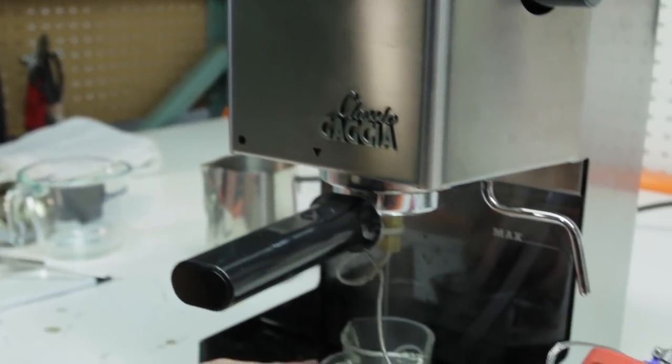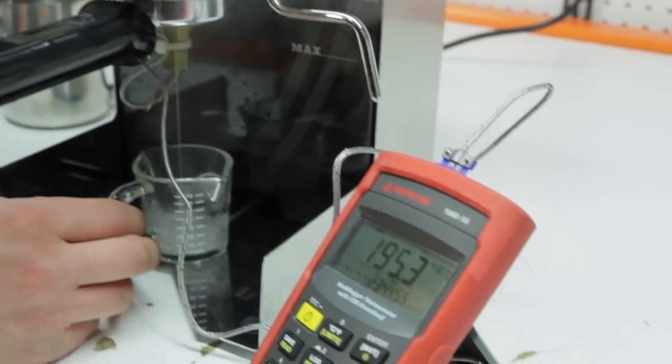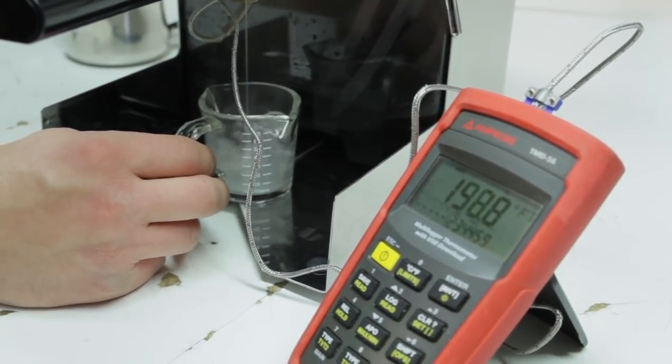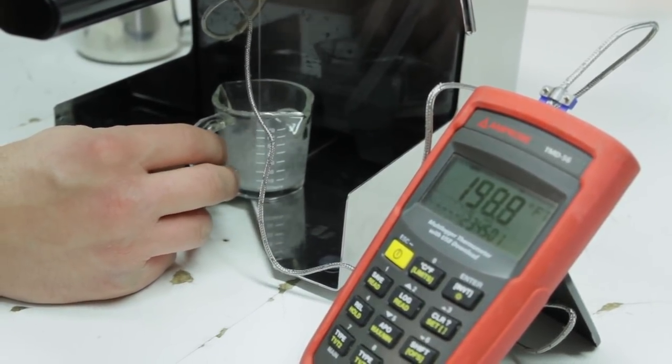Then we put the Scace thermometer on. Scace is a very nice device. It hooks up a digital meter and we can see what the actual brew temperature is. This is recommended by SCAA to use.